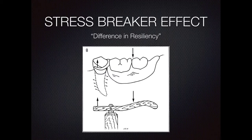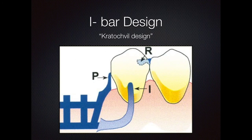Why is there a stress breaker effect? Because we understood that there is a difference in resiliency of the tissues holding the denture base and the abutment where the clasp engages. The amount of load that the tissue can take is slightly more compared to the amount of load the abutment can take. It acts like a lever arm — when an occlusal force is applied to the edentulous side, an equal and opposite upward force is applied onto the abutment, causing periodontal damage. Once we understood this, certain scientists came up with the concept of the i-bar design. The first person was Kratochvill, who came up with the i-bar design, also known as the RPI system.